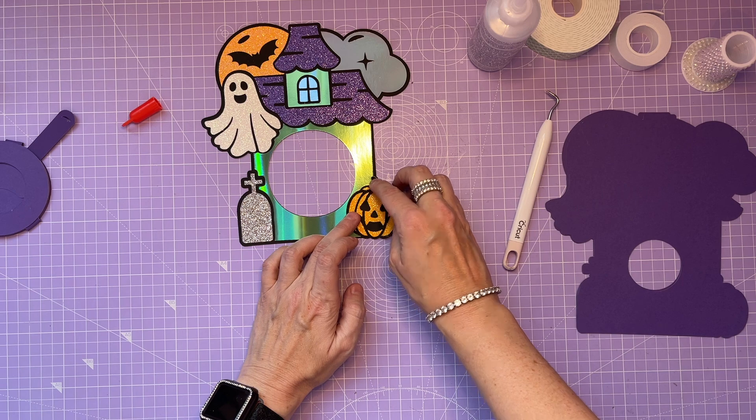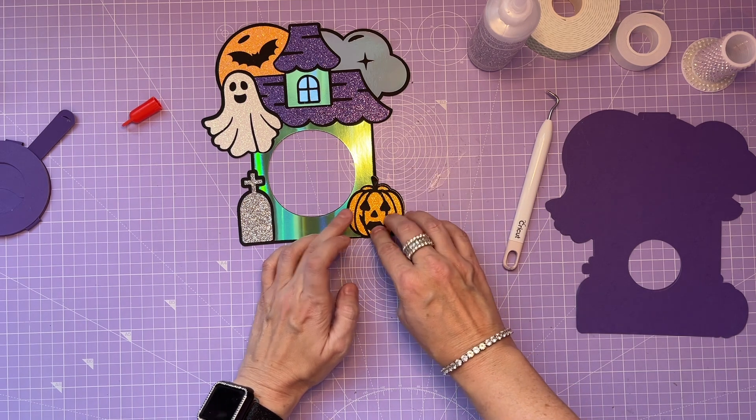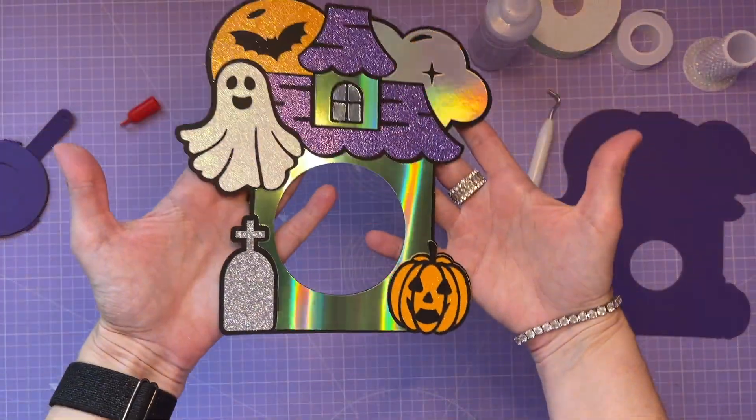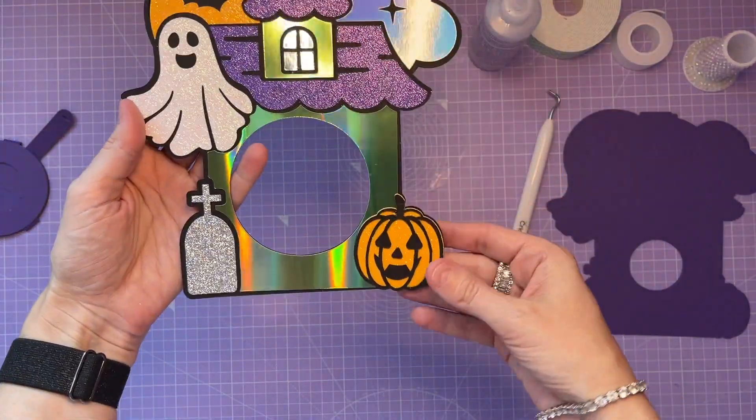So these are all of our little pieces added onto the front. I'm going to put those out of the way to dry now, and I'm going to move on to the back pieces.